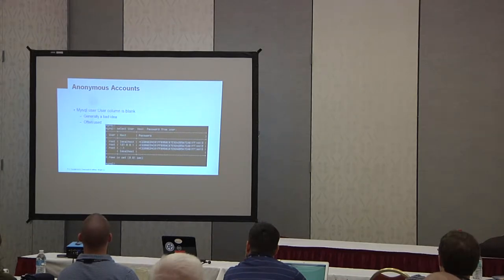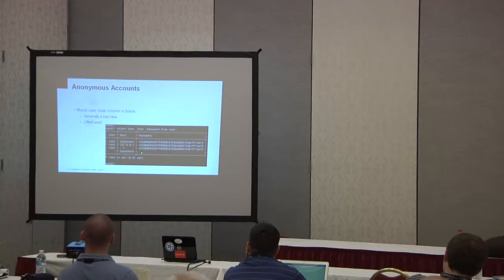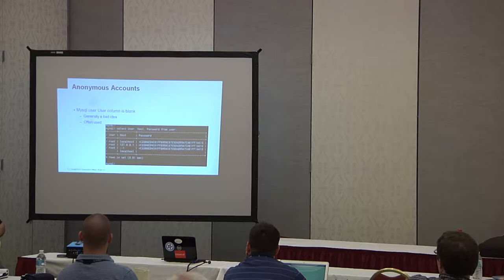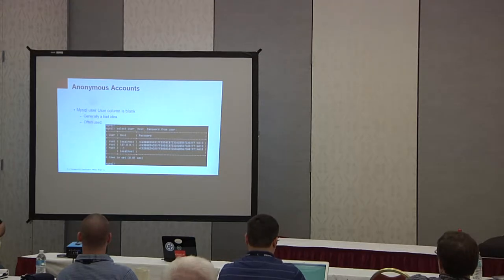Something else you'll see if you go to a strange box and you select user host and password from the user table, you'll see root from localhost with this password, root from 127.0.0.1 at this password, and you'll see root at a IP version 6 address, thankfully with the same password. And then you see a blank under user and a blank password. That's what we commonly call an anonymous account. If you can get rid of it, please do. It's a big security bug. If you do have an anonymous account out there, take away every privilege you can from it. But if you come in and you are in charge of a box and you want to lock it down, first thing to look for are anonymous accounts.